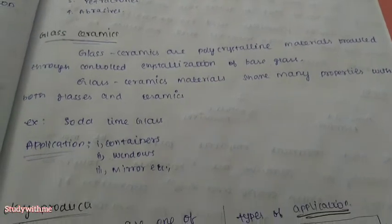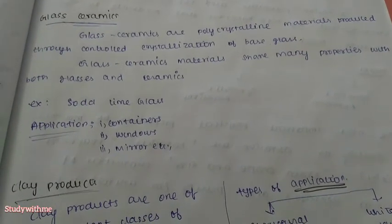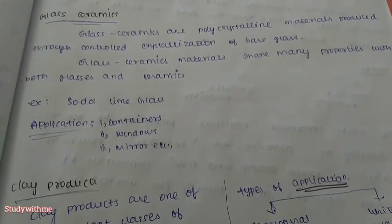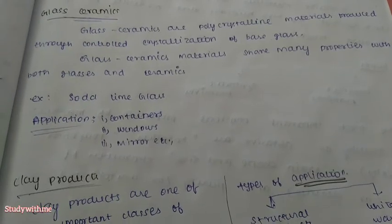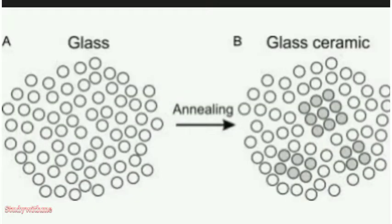An example of abrasives includes lime glass, used for containers, windows, mirrors, etc. An example is also given for glass ceramics.